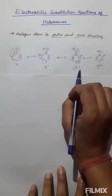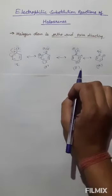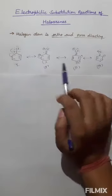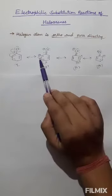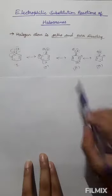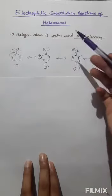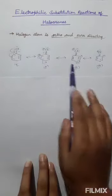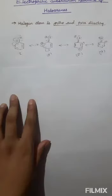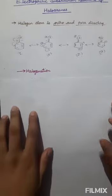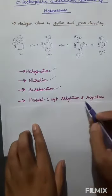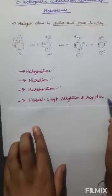Because the electrophilic substance attacks where negative charge is present, it attacks at ortho and para positions. The halogen atom is ortho and para directing due to its resonating structures, since negative charge on the ring appears only at ortho and para positions. In electrophilic substitution reactions we will discuss four reactions: halogenation, nitration, sulfonation, and Friedel-Crafts alkylation and acylation.